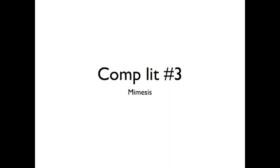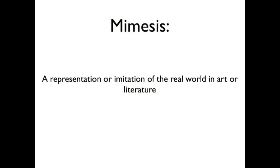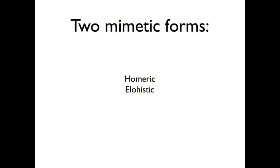The texts we're looking at today, and really all the texts we've looked at so far, are concerned with the question of mimesis. We've been dancing around this concept for a while now, but let's go ahead and define it. Mimesis is a representation or imitation of the real world in art or literature. We've seen a couple examples of how people respond to acts of mimesis: Socrates sees them as something to be mistrustful of, whereas Gorgias looks on them as a creative force in the world. And Auerbach is now going to introduce us to two mimetic forms, the Homeric and the Elohistic.